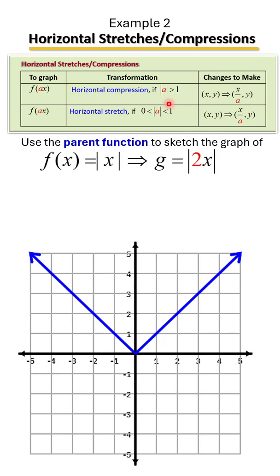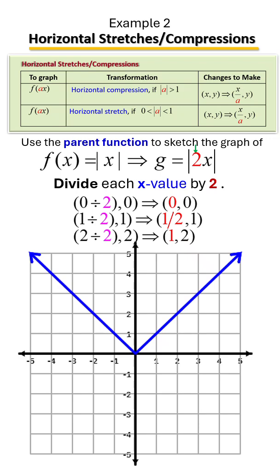So we're going to proceed by dividing each x value by that number. In this case, that number is 2, so divide each x value by 2. So once we do that, that's going to be 0 divided by 2, which is 0; 1 divided by 2, which is 1/2; 2 divided by 2, which is 1. These are our new points.